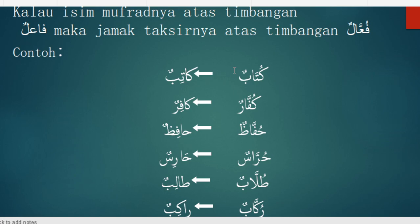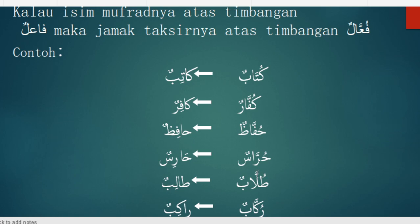Artinya banyak penulis. Contoh berikutnya: Kafirun ala wazni Fa'ilun, jadi Jama' Taksirnya adalah Fu'alun, menjadi Kuffarun. Kemudian Hafizun menjadi Huffadzun, Harisun menjadi Hurrasun, Talibun menjadi Tullabun, Ra'kibun menjadi Rukkaabun. Jadi perlu diingat, jika isim mufradnya timbangan Fa'ilun, maka Jama' Taksirnya menjadi atas timbangan Fu'alun.